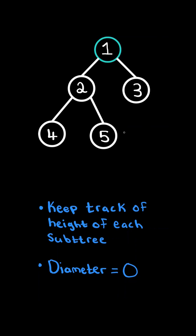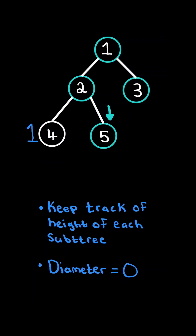We first pass in the root node, and we recurse on its left and right subtree, and further recurse on their left and right subtrees. Let's first consider the recursive step on node 4. It has no left or right subtree, and therefore there is no diameter on this subtree, and lastly we return the height of its subtree, which is 1.